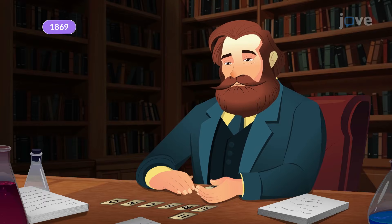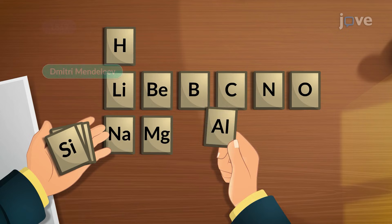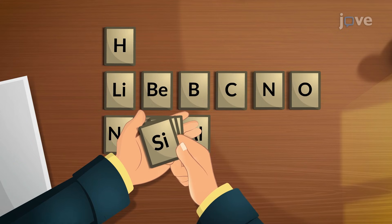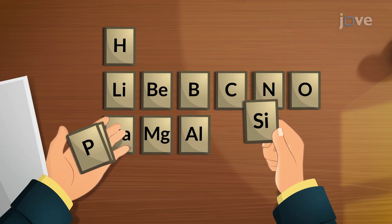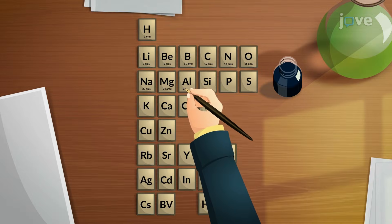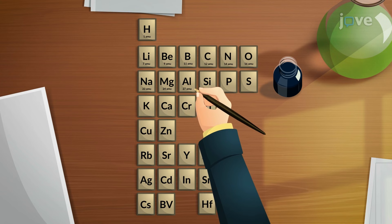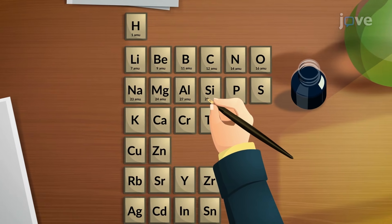In 1869, a Russian scientist named Dmitry Mendeleev solved this by creating a system to organize elements, similar to arranging books on shelves. Mendeleev began by writing the names of elements on cards, including their properties like atomic mass and reactivity.